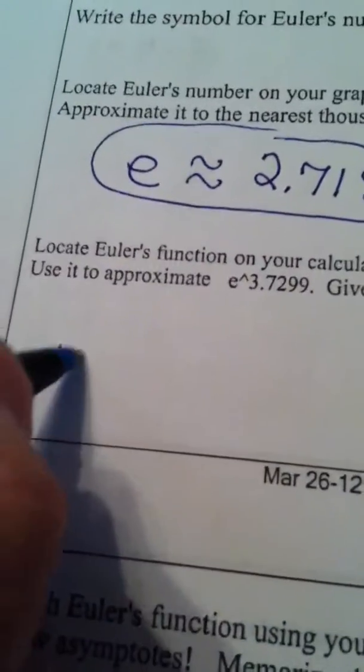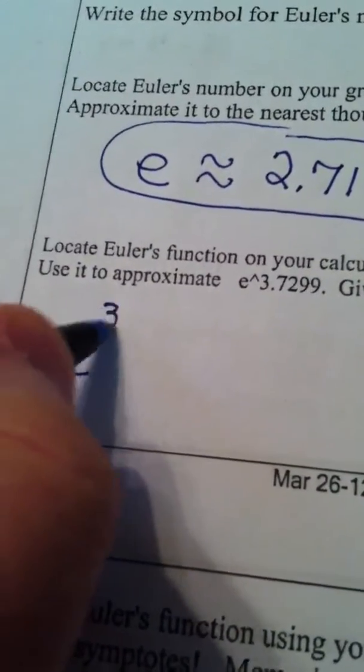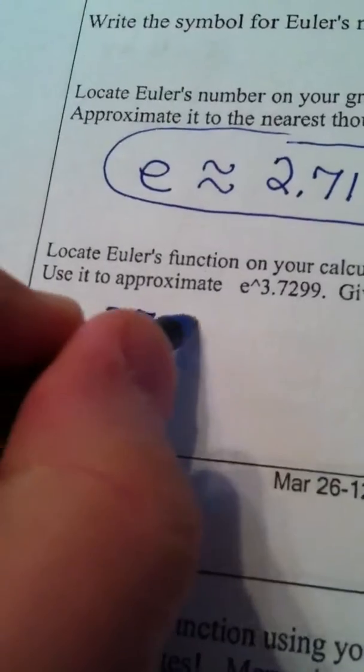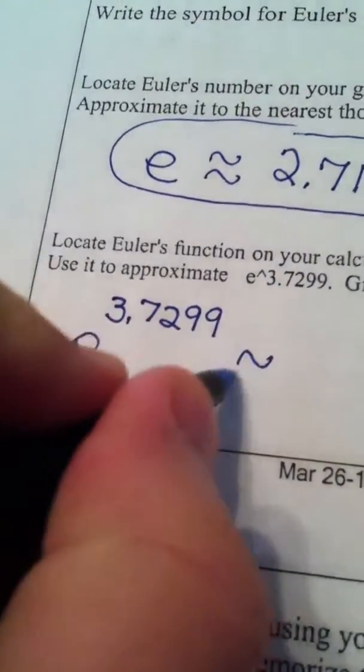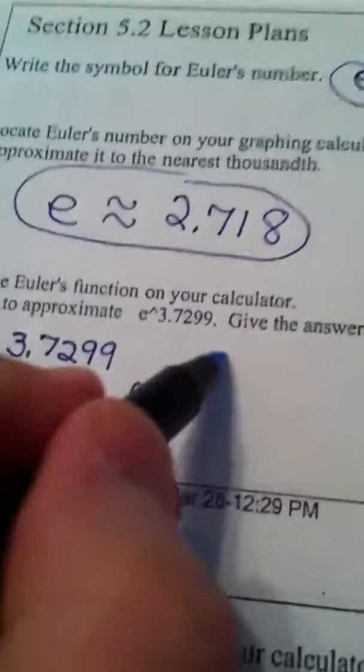So in other words, they want us to evaluate e to the 3.7299 power. They want us to give the answer to the nearest thousandth.